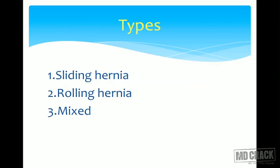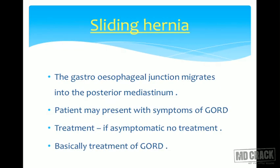Hiatus hernia has three main types: sliding hernia, rolling hernia, and a mixture of these two called mixed hiatal hernia. The differentiation depends on the anatomical and pathoanatomical location of the gastroesophageal junction and the structures herniating through the hiatus into the thorax. In sliding hernia, the gastroesophageal junction migrates into the posterior mediastinum through the esophageal opening in the diaphragm.